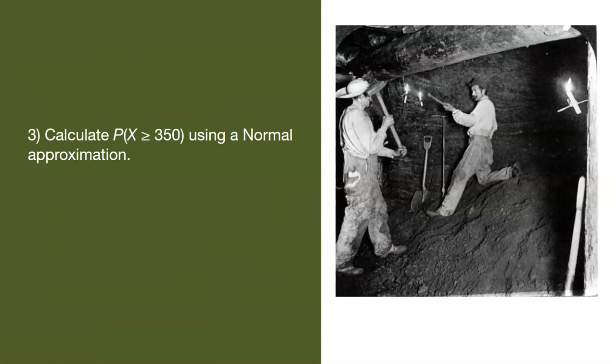We'll do this as an exercise: calculate the probability that 350 or more Minnesotans support mining using the normal approximation. We're going to use the Z table for these calculations. Let's now calculate these values using the normal approximation.